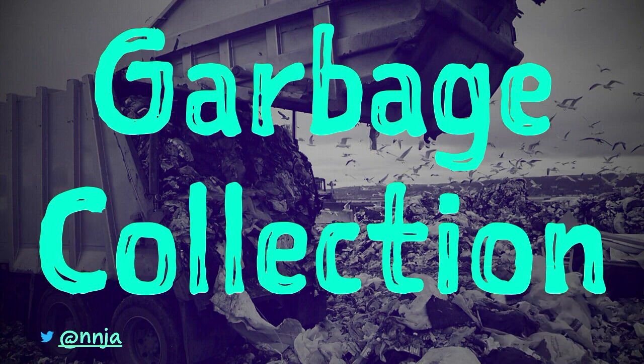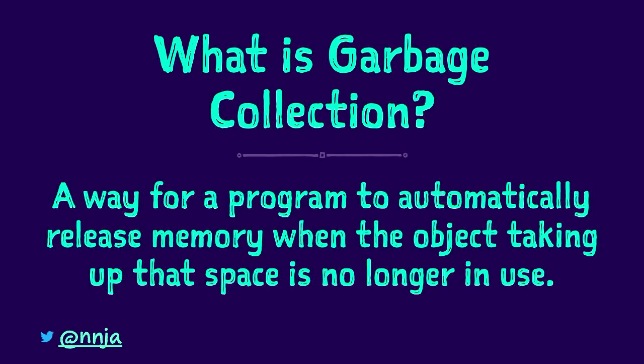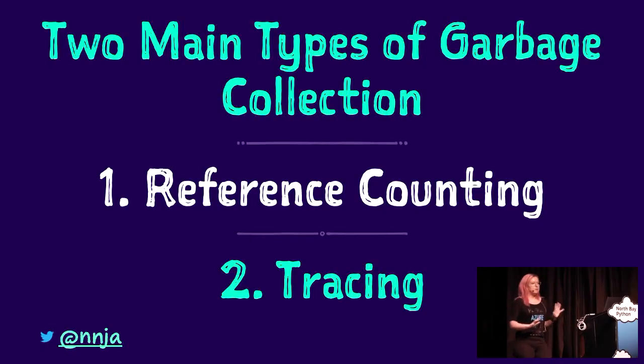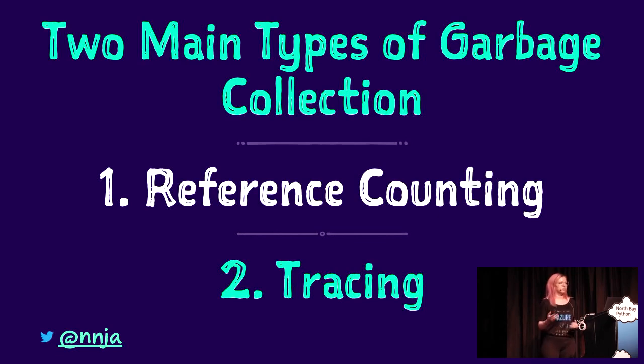This all leads into garbage collection. What is garbage collection? It's a way for a program to automatically release memory when the object taking up space is no longer in use. Back in the day, programmers had to allocate and deallocate memory manually — and if you forgot to free memory, it could cause memory leaks; if you accidentally overwrote memory, your program could crash. Garbage collection to the rescue — I like to think of it as memory recycling. There are two main types: reference counting and tracing. In a way, Python uses both.